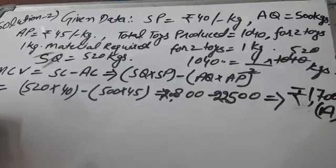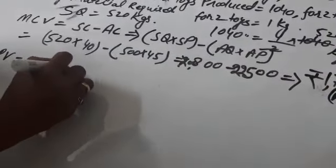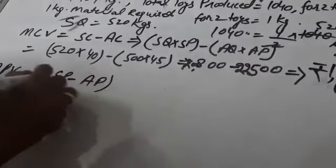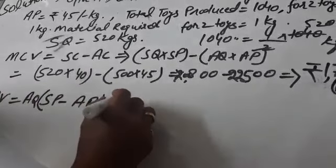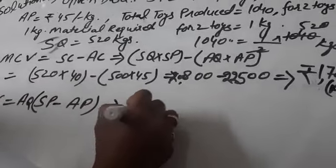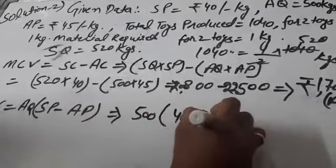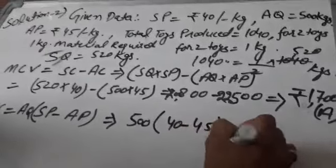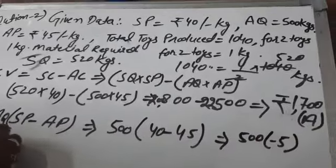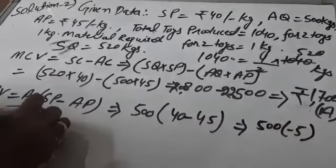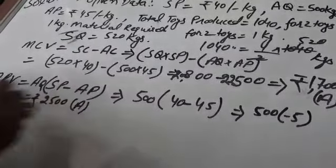Now we will calculate MPV, Material Price Variance. Its formula is standard price minus actual price multiply actual quantity. We will put the values: actual quantity 500 kilograms, standard price 40 minus 45. The answer is 500 multiply negative 5, which is Rs. 2500 in adverse form.